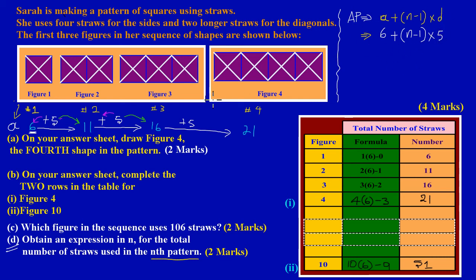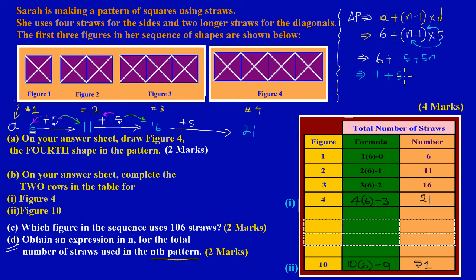Simplifying: six + (n − 1) × 5 gives us six + 5n − 5. Combining constants: six minus five equals one, so the expression becomes 5n + 1. Therefore the nth term — the formula for the total number of straws in the nth pattern — is 5n + 1. That answers Part D.